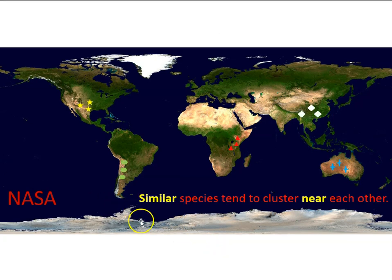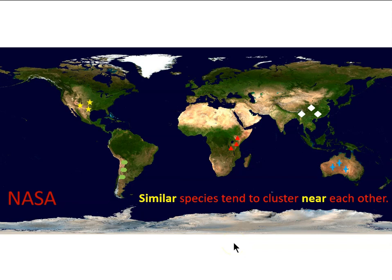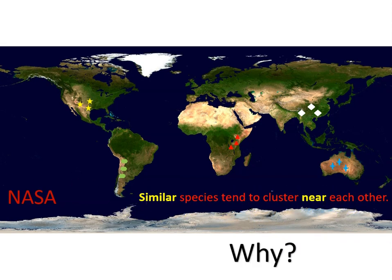In his travels Darwin noticed an interesting pattern around the world: similar species tend to cluster near each other. This observation was also made by a contemporary, Alfred Russell Wallace, who independently discovered the process of natural selection. Both men realized this pattern in nature, and of course this cries out for an explanation — why would that be?